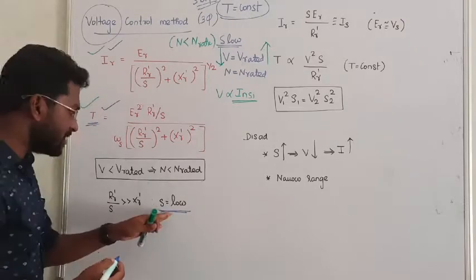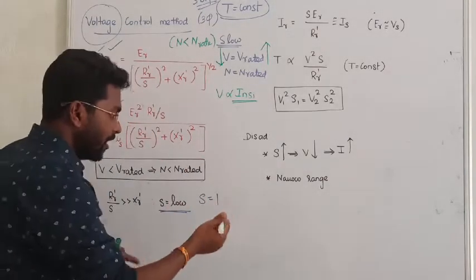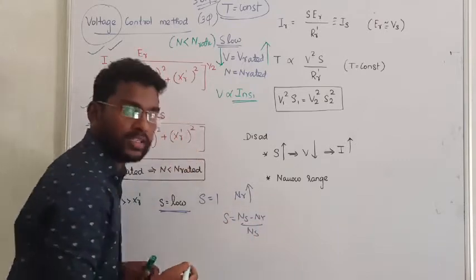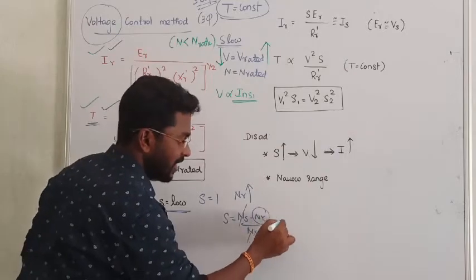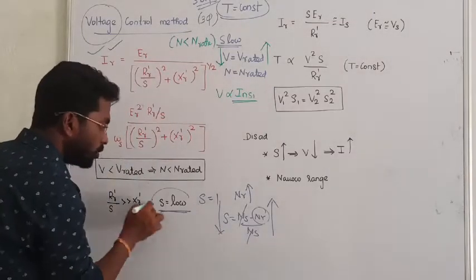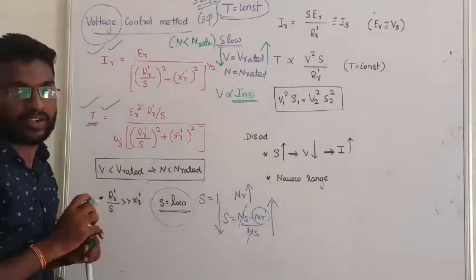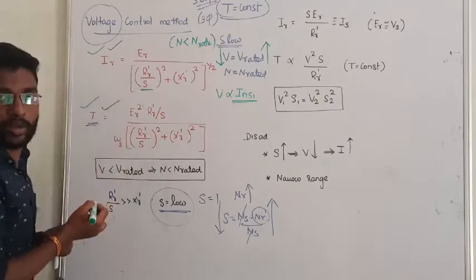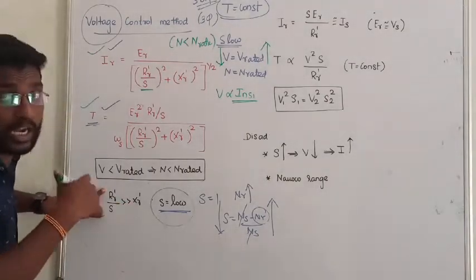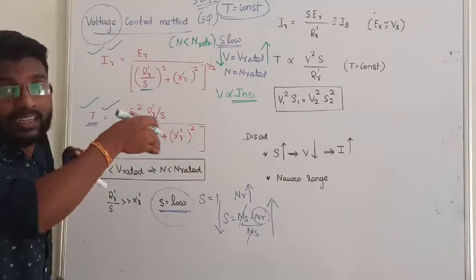When the value of slip is low under running conditions — we know that when starting the induction motor, slip is high and equals 1, but while running the rotor speed keeps increasing so slip starts decreasing and becomes very low. When slip is low, R'/S becomes much greater than the rotor reactance X, so we can approximately neglect the effect of rotor reactance.